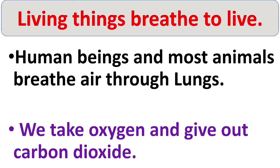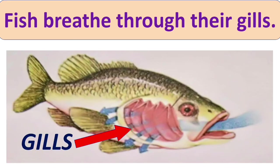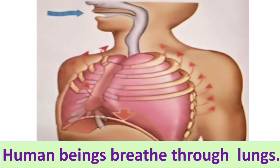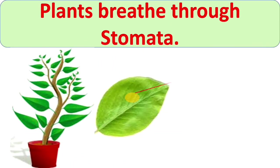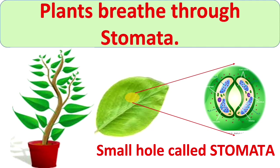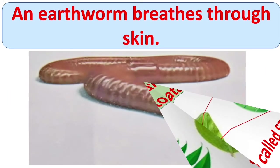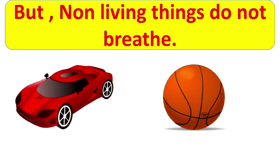Living things breathe to live. Human beings and most animals breathe air through their lungs — we take in oxygen and give out carbon dioxide. Fish breathe through their gills, and plants also breathe through stomata, which are small holes present on the leaf. Earthworms breathe through their skin. But non-living things do not breathe.